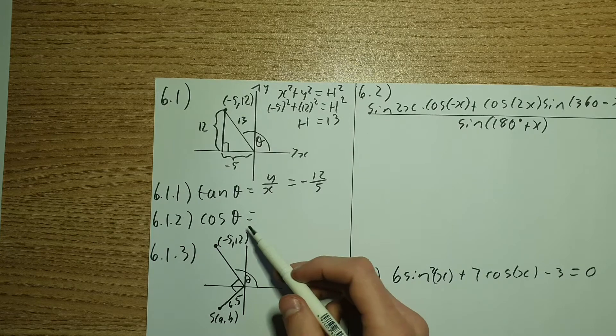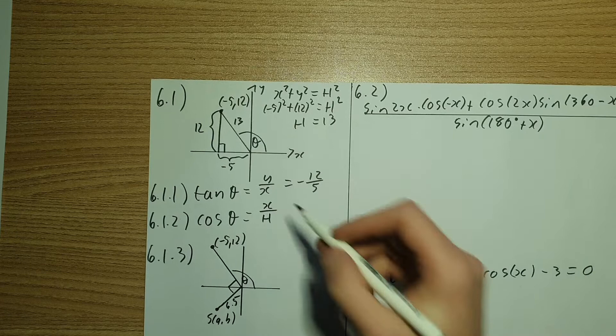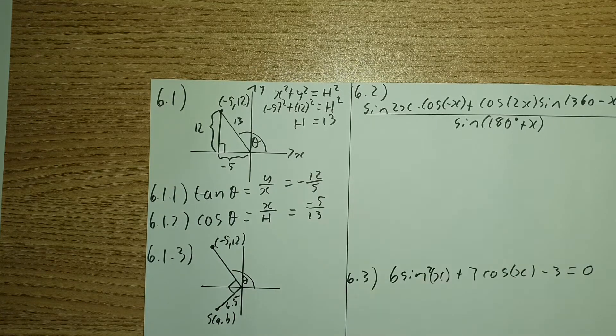Now that we have that, let's answer 6.1.1. So 6.1.1 asks us to find tan. Now remember, tan is y over x, the ratio for it, for the triangle. Therefore, we're going to have our ratio is going to be negative 12 over 5.